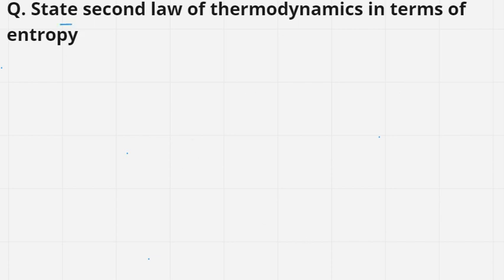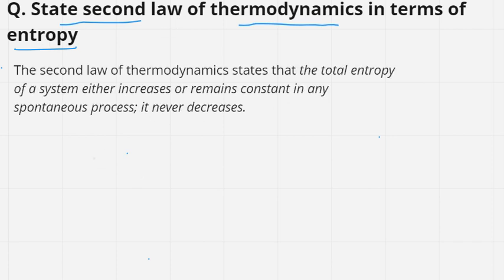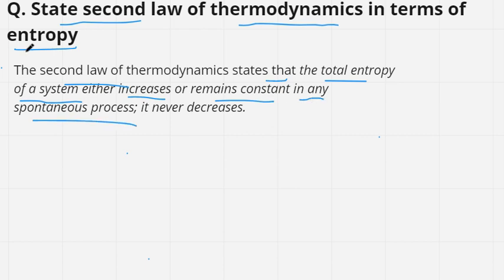This question is: state the second law of thermodynamics in terms of entropy. So we have to use entropy to define the second law of thermodynamics. The second law of thermodynamics states that the total entropy of a system either increases or remains constant in any spontaneous process, but it never decreases.